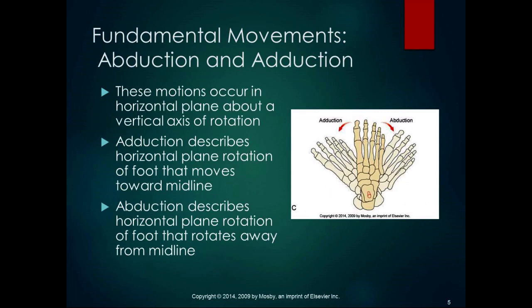Abduction and adduction occur about a horizontal plane on a vertical axis of rotation. Adduction describes horizontal plane rotation of the foot toward the midline, and abduction describes horizontal plane rotation away from the midline. These also occur in the more distal joints of the foot — it's not any one joint, but several joints combined.